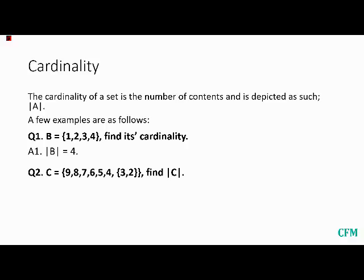We've got a set within a set. The important thing to remember is that when you have a set within a set, the subset counts as a single element. So we have 9, 8, 7, 6, 5, 4, which are six elements, and then the set {3, 2}, which is one element. So the cardinality of C is 7.